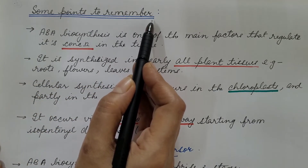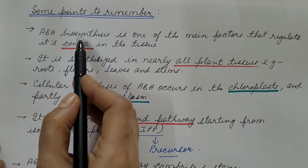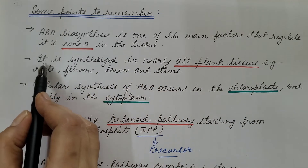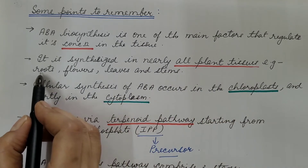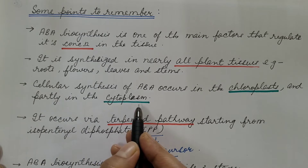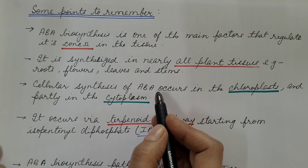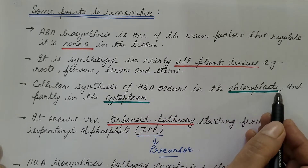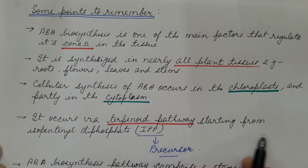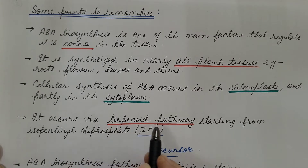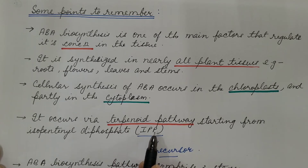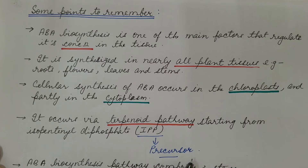Some points to remember in biosynthesis of abscisic acid. First, abscisic acid biosynthesis is one of the main factors that regulate its concentration in the tissue. It is synthesized in nearly all plant tissues — for example, roots, flowers, leaves, and stems. Cellular synthesis occurs in the chloroplast and partly in the cytoplasm. It occurs via the terpenoid pathway, starting from isopentanyl diphosphate, which is the precursor of this pathway.